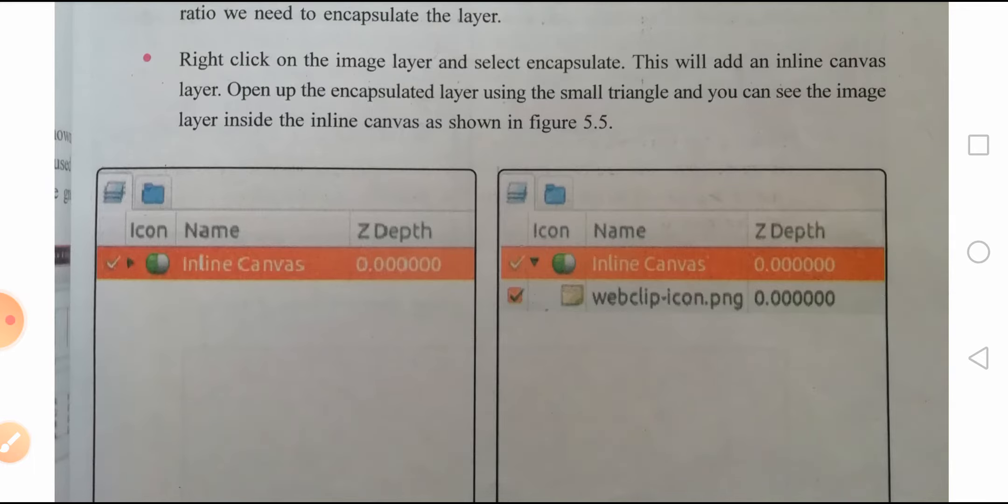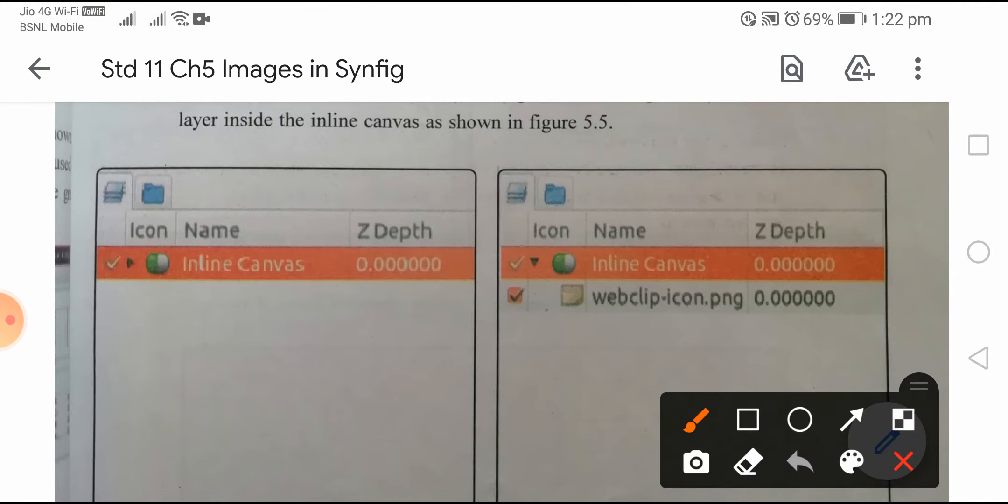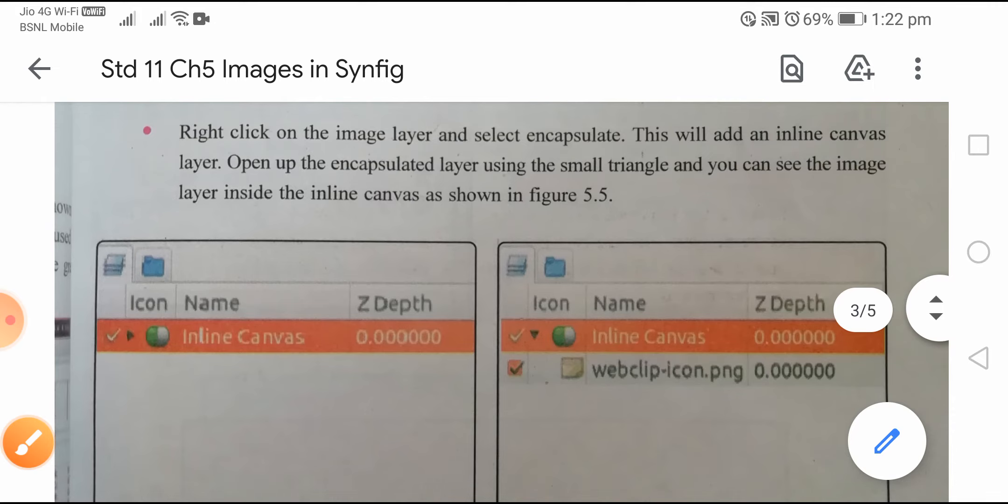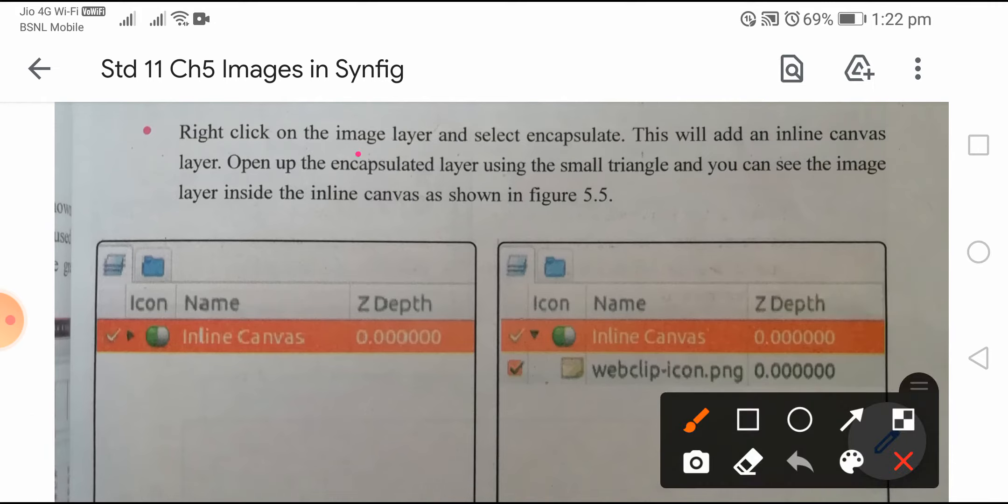How to encapsulate that layer? Right click on the image layer and select Encapsulate, or group layer. This will add an inline canvas layer on top of that image layer.